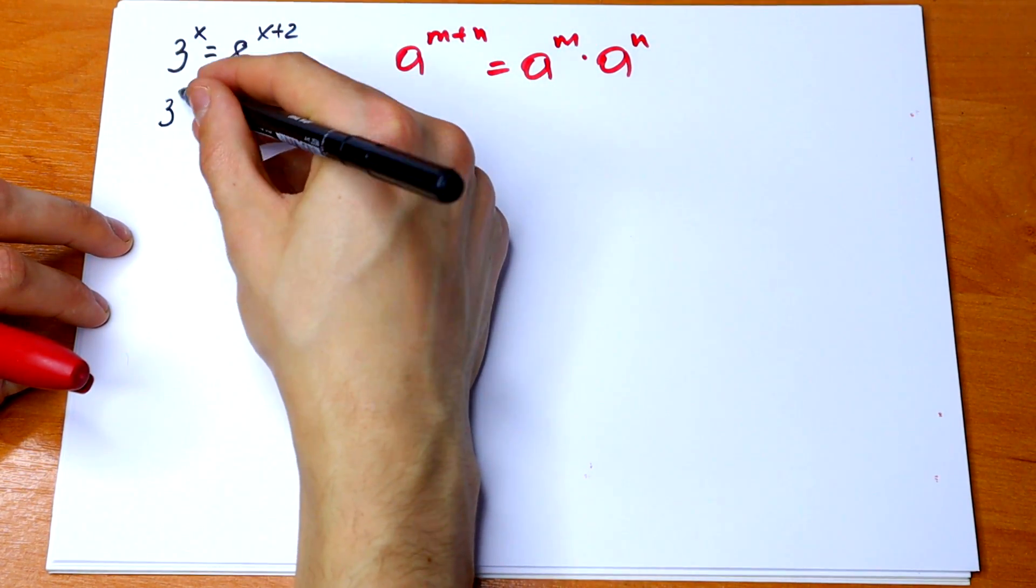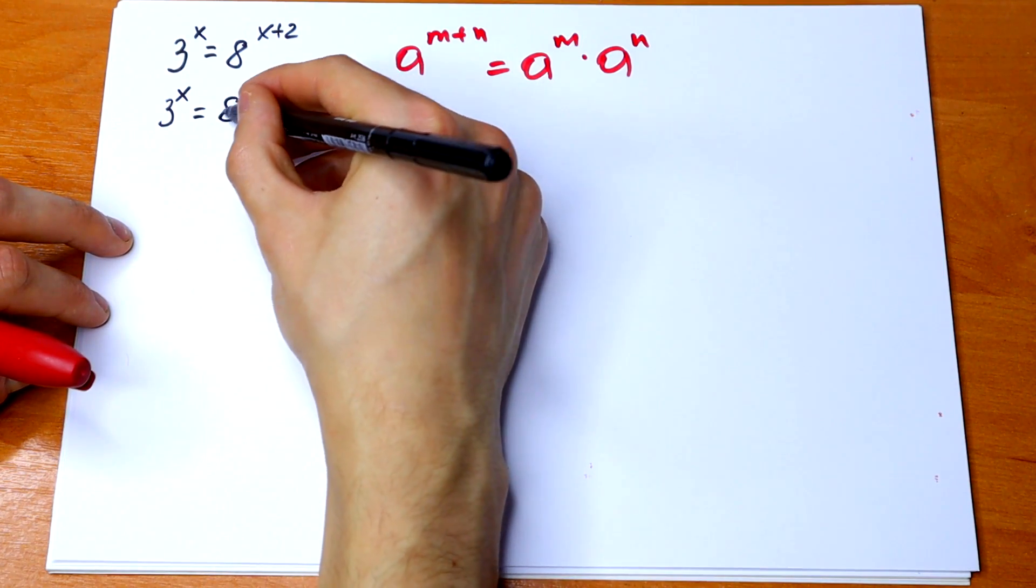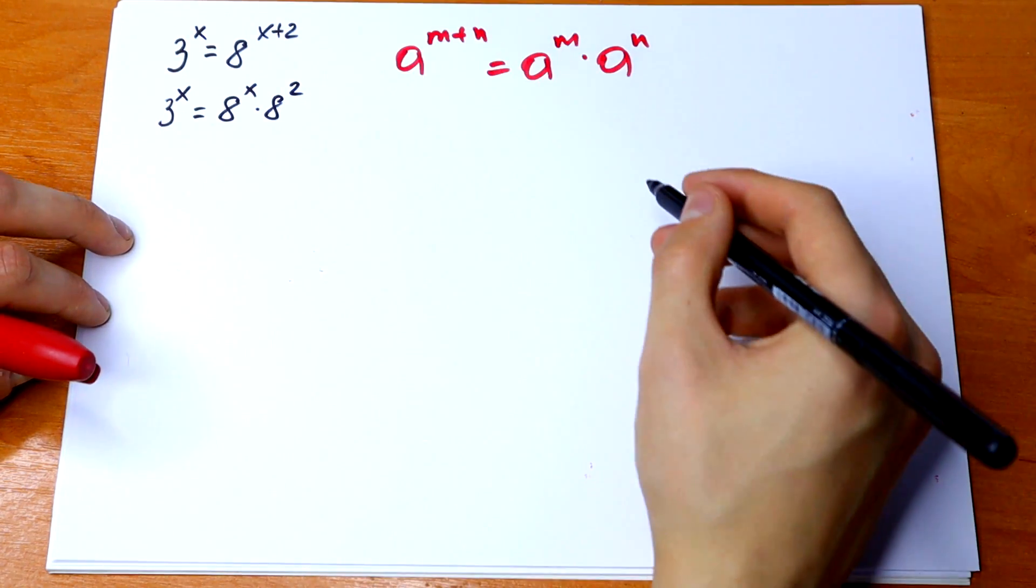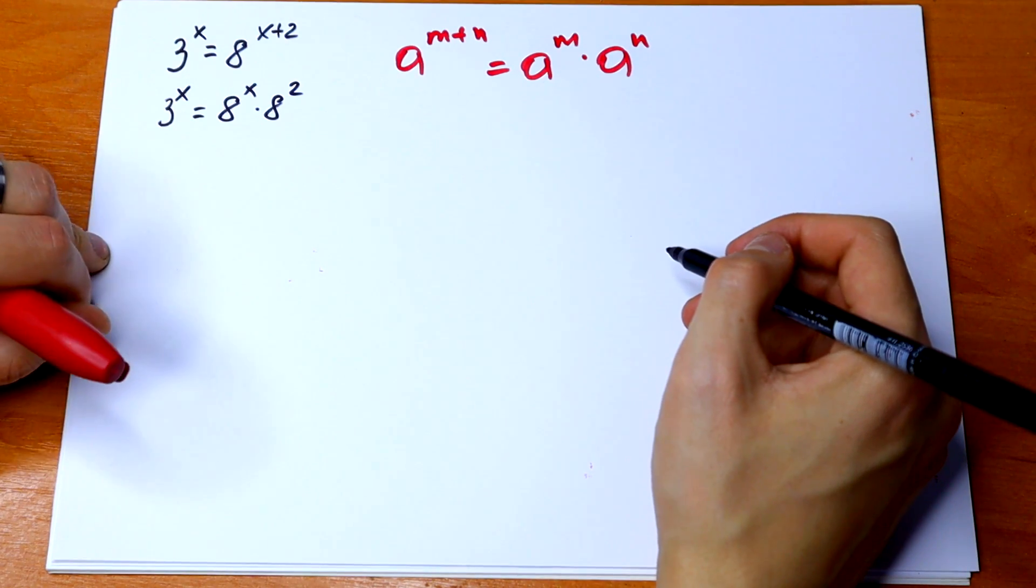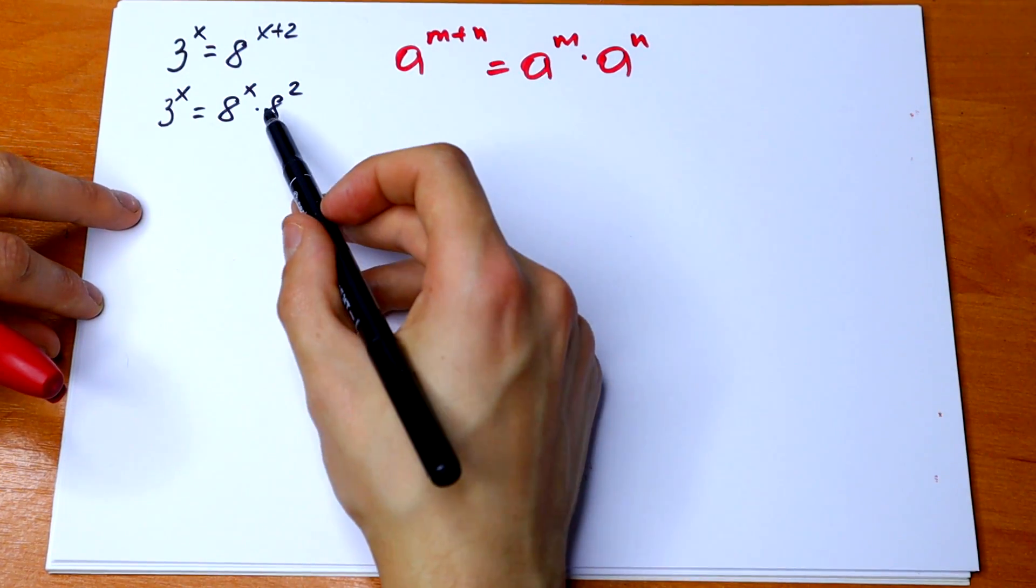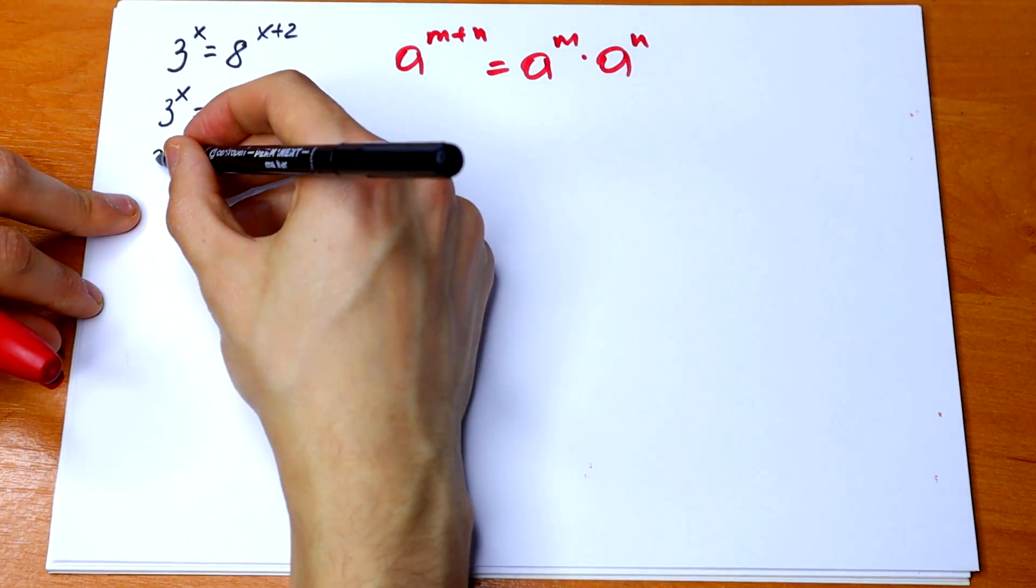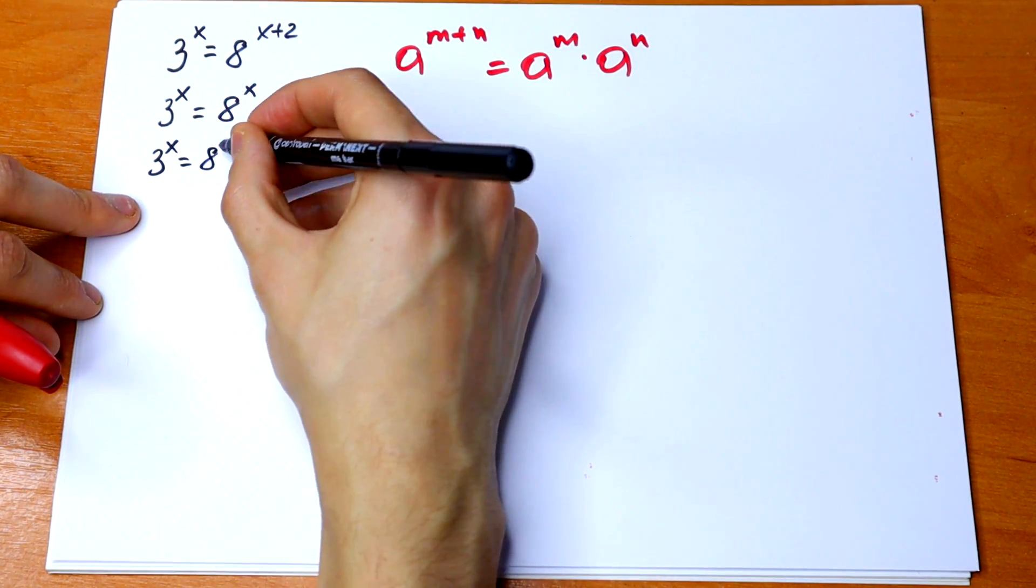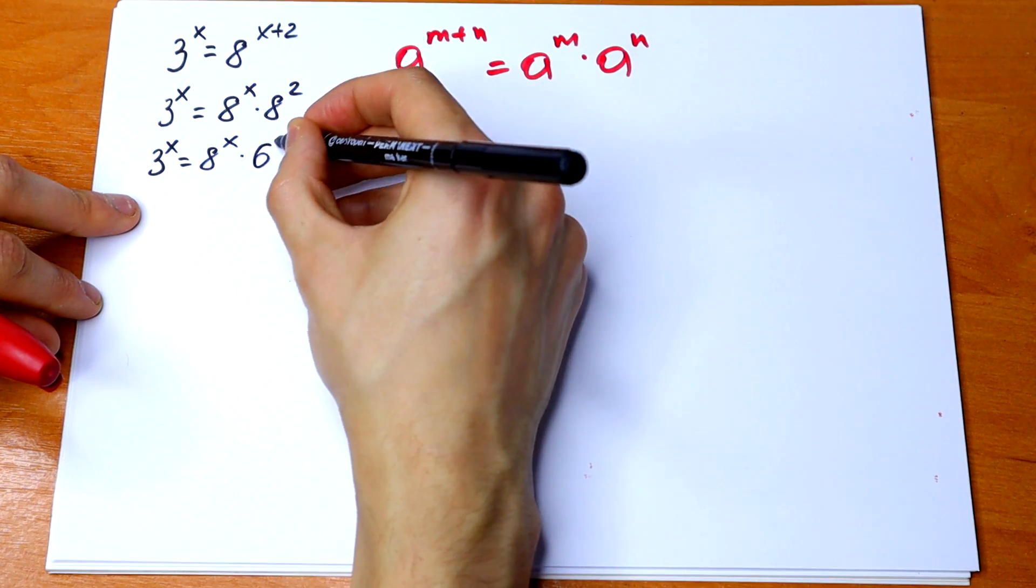So let's use this rule right here. So I will have 3 to the power x equals 8 to the power x times 8 squared. Nothing hard, just using this rule. So the next step, I can simplify this a little bit. 3 to the power x equals 8 to the power x times 64.